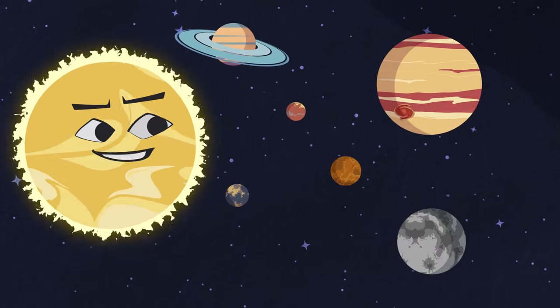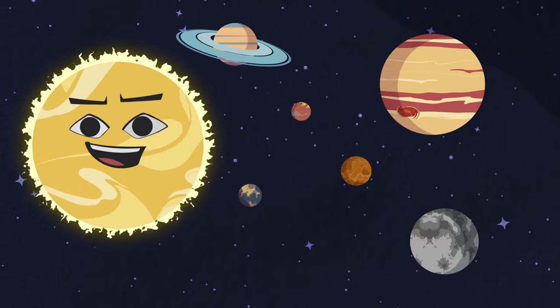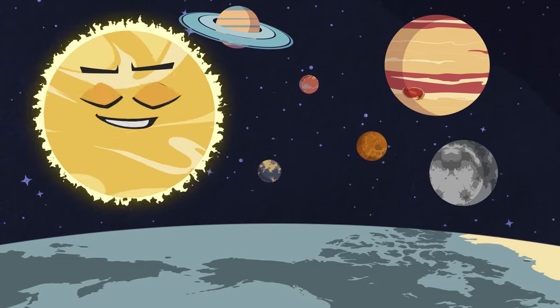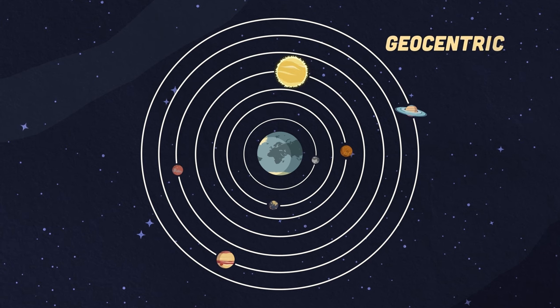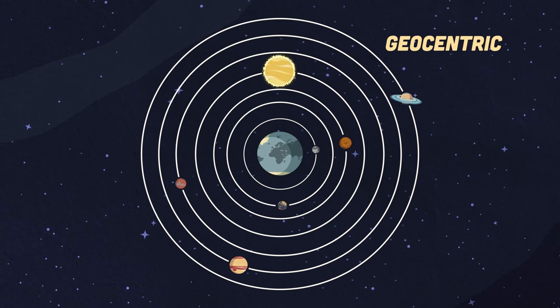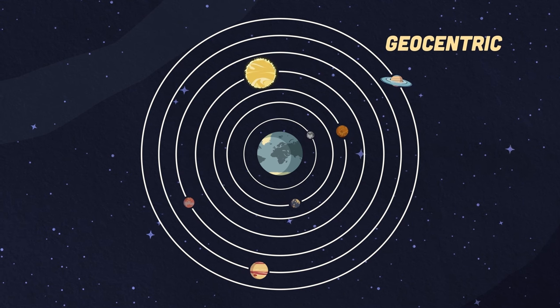For over 1500 years ancient man thought the Earth was the center of the solar system, that was what was taught. This theory was called the geocentric model, shown here, which means the Earth was the center of the universe.